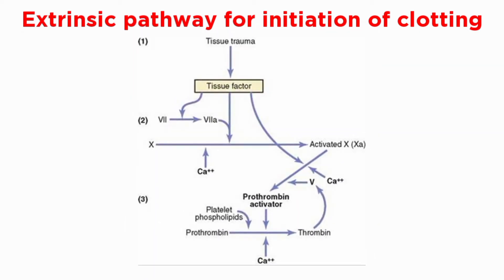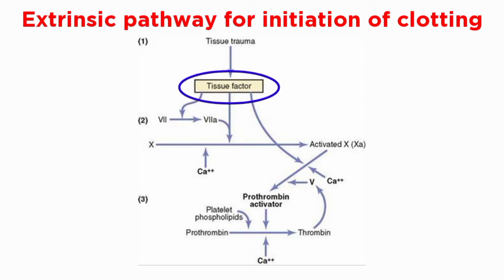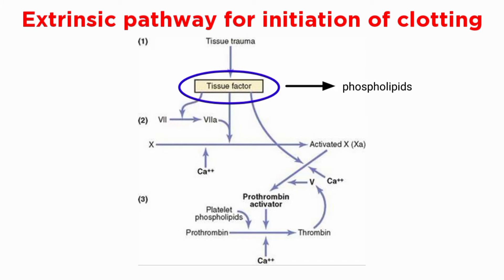Now let's first take a look at the extrinsic pathway for initiation of clotting. The extrinsic pathway for initiating the formation of prothrombin activator begins with a traumatized vascular wall or traumatized extravascular tissue that comes in contact with the blood. These traumatized tissues release a complex of several factors called tissue factor, or tissue thromboplastin.